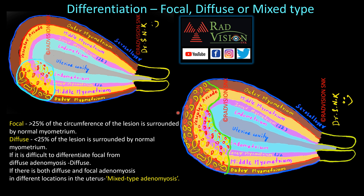We have to differentiate whether the adenomyosis is focal, diffuse, or mixed type. A focal lesion is defined as greater than 25% of the circumference of the lesion surrounded by normal myometrium. Diffuse type is when less than 25% of the lesion is surrounded by normal myometrium. If it is difficult to differentiate, it is considered diffuse. If there is both diffuse and focal adenomyosis in different locations of the uterus, it is considered mixed type.